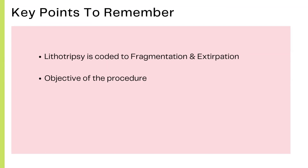Key points to remember for lithotripsy procedures: if the stone is fragmented and removed using a basket, code it as Extirpation. However, if the stone is fragmented but left inside the ureter or urinary stream to drain out, code it as Fragmentation. With Fragmentation, the objective of the procedure is to break the stone into smaller pieces so that it can drain out from the urinary stream. These are the key points to remember.